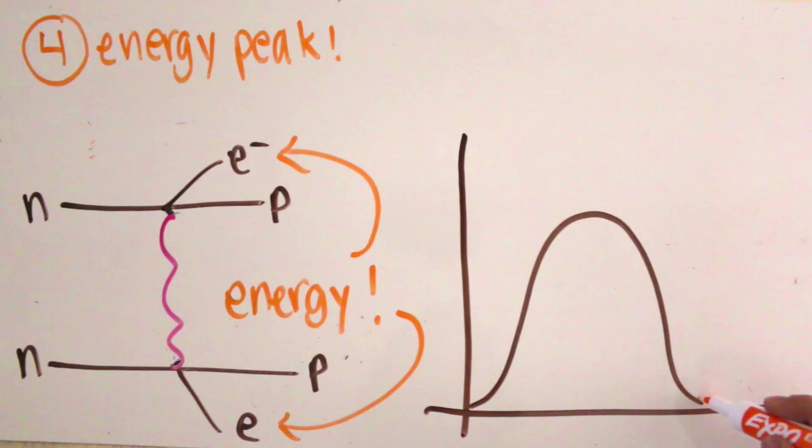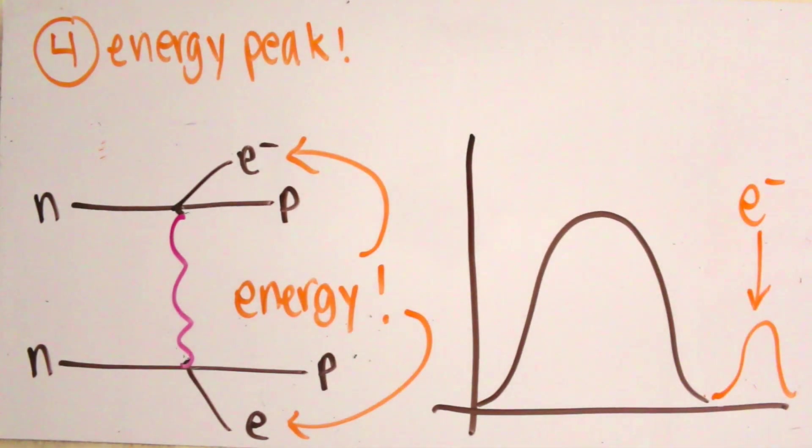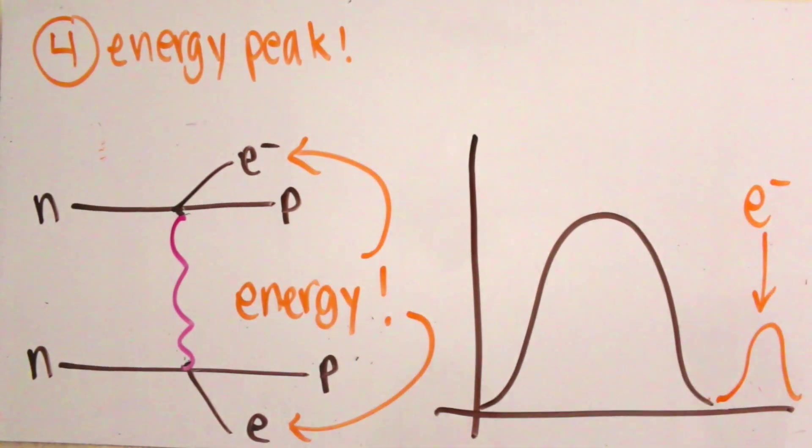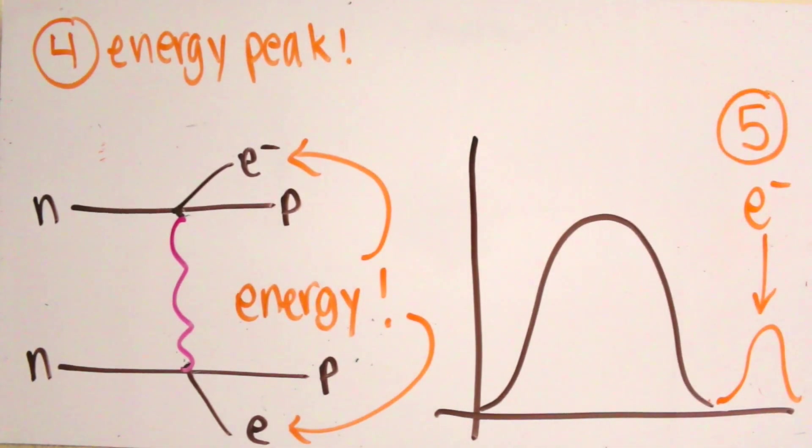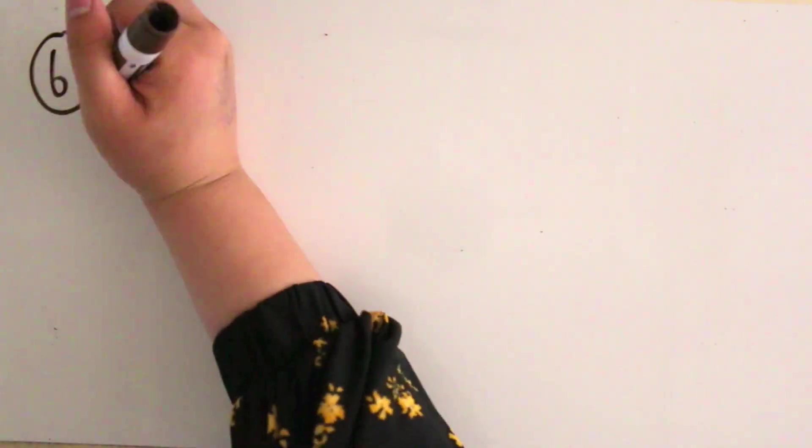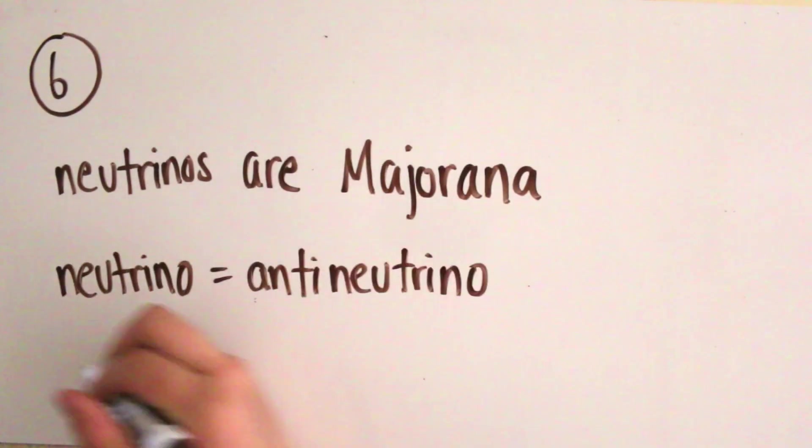Four: outside of the broad energy spectrum, we see a peak in the high energy range. Five: the peak of high energy particles is the electrons, and because of the conservation of energy, we can conclude that the extra energy came from the neutrinos' annihilation. Six: we proved the Majorana nature of neutrinos.